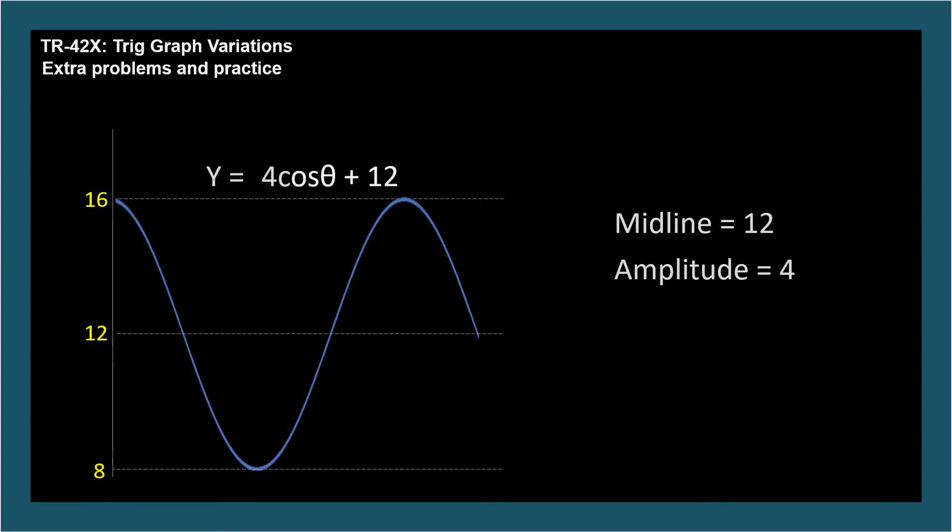The midline and amplitude should be very easy for you to determine from a graph just by looking at it. If the curve were inverted about the midline, we'd just need to reverse the sign of the A parameter, the trig function's coefficient, so negative 4 cosine theta plus 12. The amplitude is still 4, even though the coefficient is negative. The amplitude is the absolute value of parameter A.